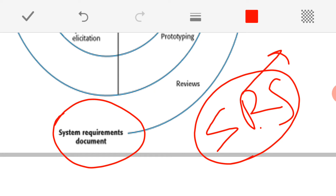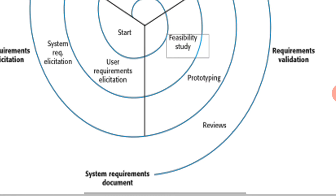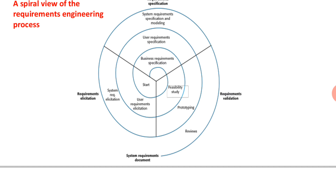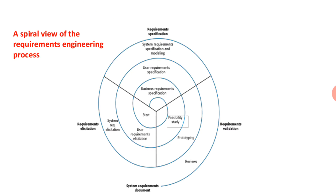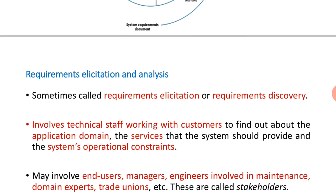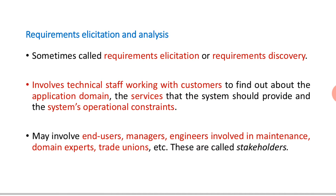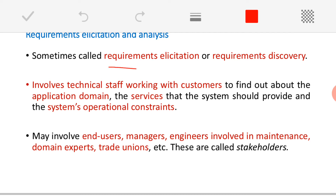Finally, we come up with our final document — the system requirement document, or system requirement specification, SRS. This is a very important document that will be the base for our next activities like design, implementation, and validation. This is the spiral view of the requirement engineering process.